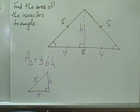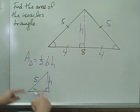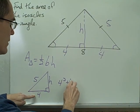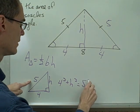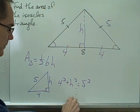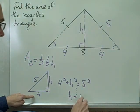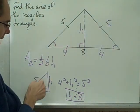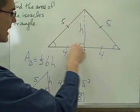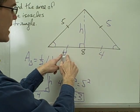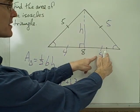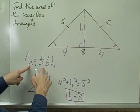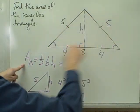I can use the Pythagorean theorem to find H. With 5 as the hypotenuse and 4 and H as the two legs: 4 squared plus H squared equals 5 squared. Doing this arithmetic, I find that H equals 3. So using the Pythagorean theorem, and the fact that the altitude divides the base into two equal halves of 4, I was able to figure out that the height is 3.